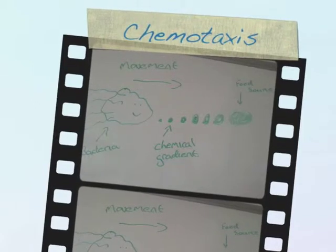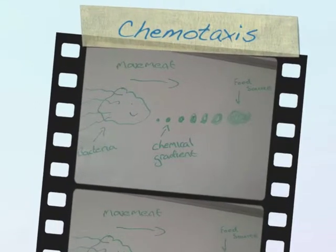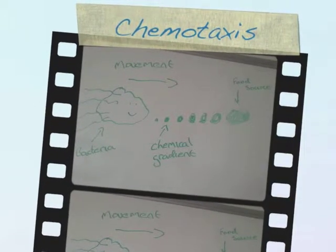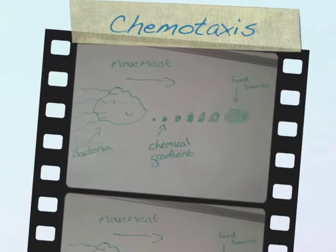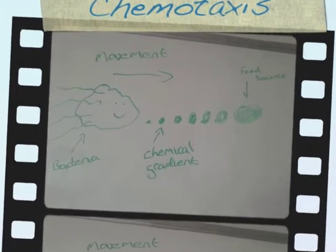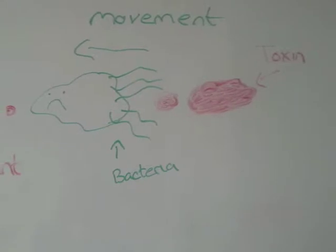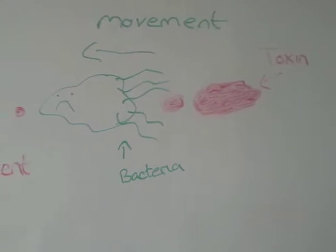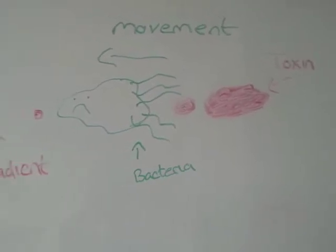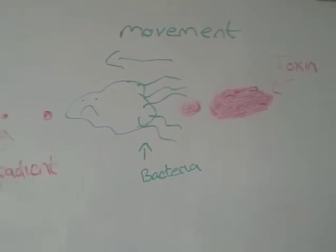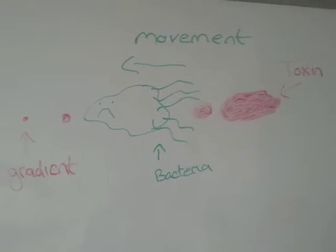The ability to move in response to external stimulus is essential for many life forms. Certain single cellular and multicellular organisms move in response to chemical stimuli which is present in their environment. This phenomenon is known as chemotaxis and it is required for many biological processes.